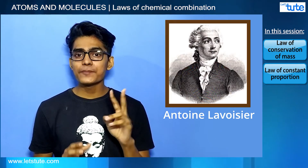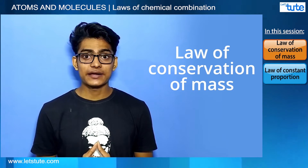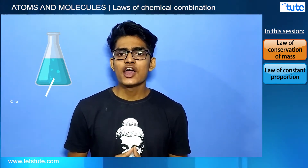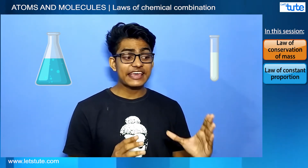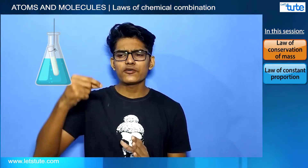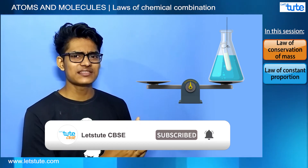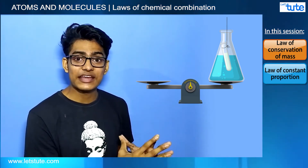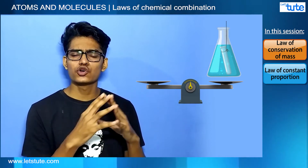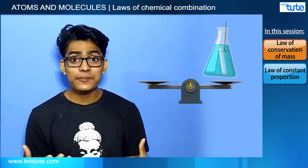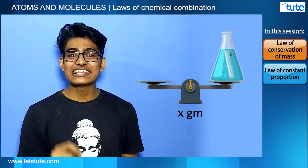He proposed two very important laws of combination. The first law was conservation of mass. To prove this, he took a conical flask containing copper sulfate and a test tube containing sodium carbonate. He carefully placed the test tube inside the conical flask with the help of a thread so that the solutions don't mix. He weighed this whole apparatus in a weighing machine and found it weighed x grams. He then shook the whole apparatus to perform a chemical reaction, and after the reaction took place, he weighed the apparatus again.